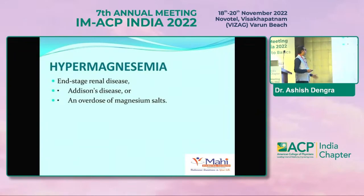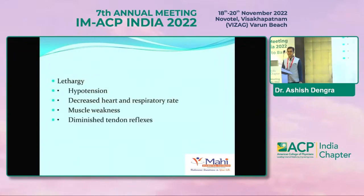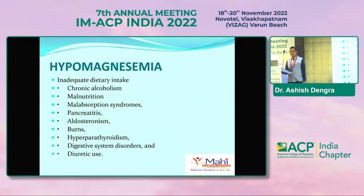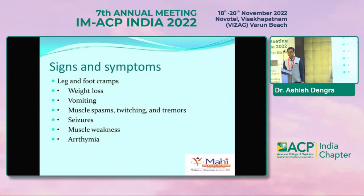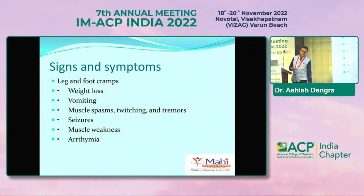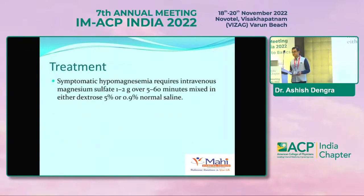Hypermagnesemia, seen in Addison's disease or overload of magnesium salts, presents with lethargy, hypotension, and muscle weakness. Treatment: discontinue the exogenous source of magnesium. Calcium antagonizes magnesium and may be given intravenously as calcium chloride. Hemodialysis or peritoneal dialysis may be required in kidney failure. Hypomagnesemia is commonly seen in alcoholism, malnutrition, and pancreatitis. Signs and symptoms include leg and foot cramps. Many diabetic patients with calf muscle cramps may have magnesium deficiency. Symptomatic hypomagnesemia can be treated with IV magnesium sulfate 1 to 2 grams over 5 to 60 minutes mixed in dextrose or saline.